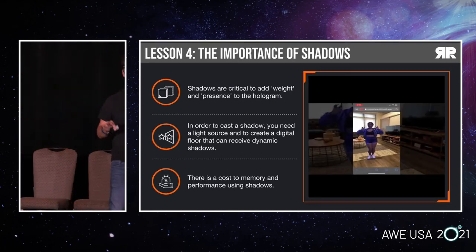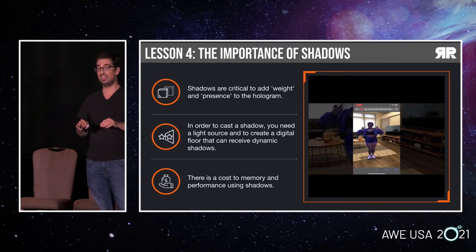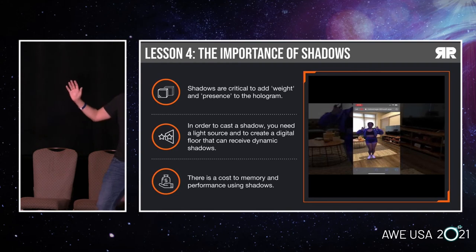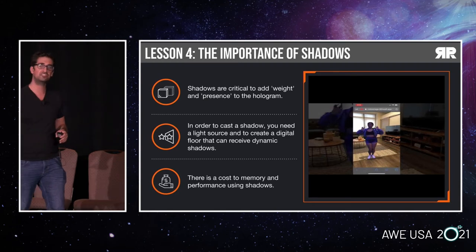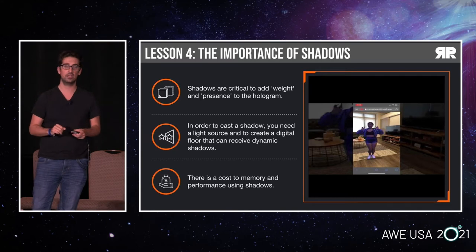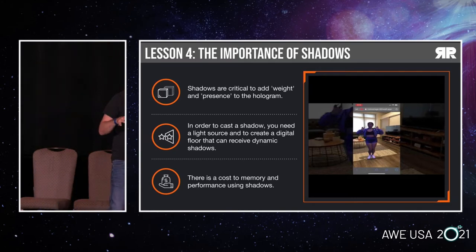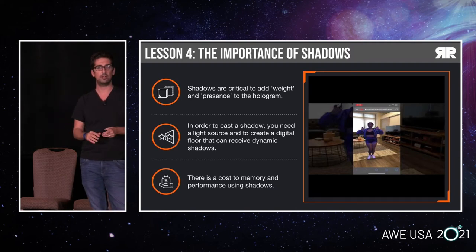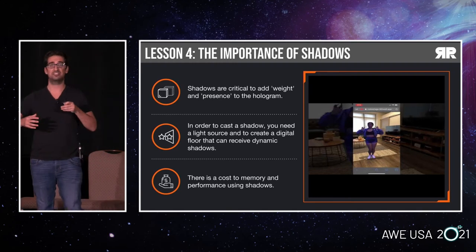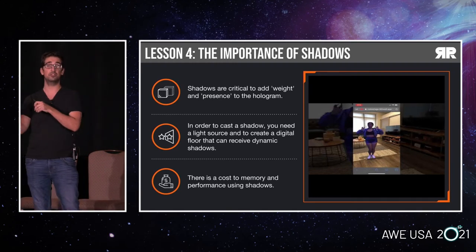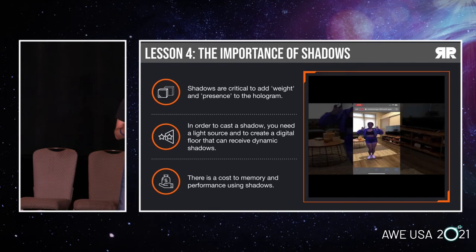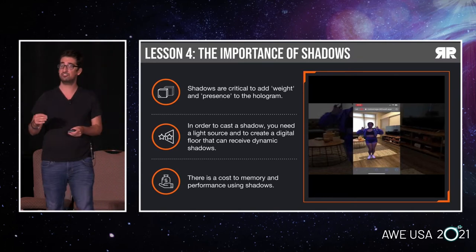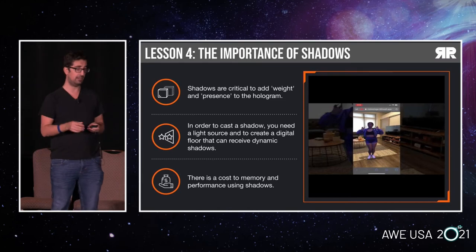Lesson four: shadows are critical in adding a presence and a weight to your holograms. Without them, they just seem to be floating in the air. You need three things to have a shadow: the hologram, a light source, and a digital floor that can receive the shadows. You can have a static shadow — maybe a semi-transparent PNG — or a dynamic shadow that changes as the hologram moves or as the lights move. Dynamic shadows really create immersion and presence. There is a performance cost to adding shadows, but if you can, we highly recommend you include them.